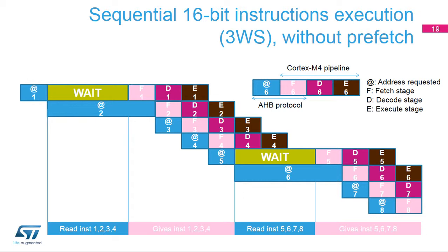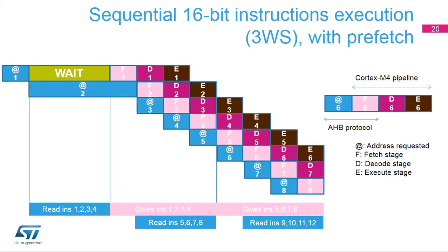This slide shows the number of cycles needed to execute sequential 16-bit instructions without prefetch when three wait states are needed to access flash memory. Every flash access provides 64 bits or four instructions, so three wait states are inserted every four instructions. The next slide shows the same scenario with prefetch enabled: after each flash access, another flash access fills the prefetch buffer, so once instructions are fetched from the current buffer, the next sequential instruction is read from the prefetch buffer with no wait states inserted as long as the instruction flow is sequential.